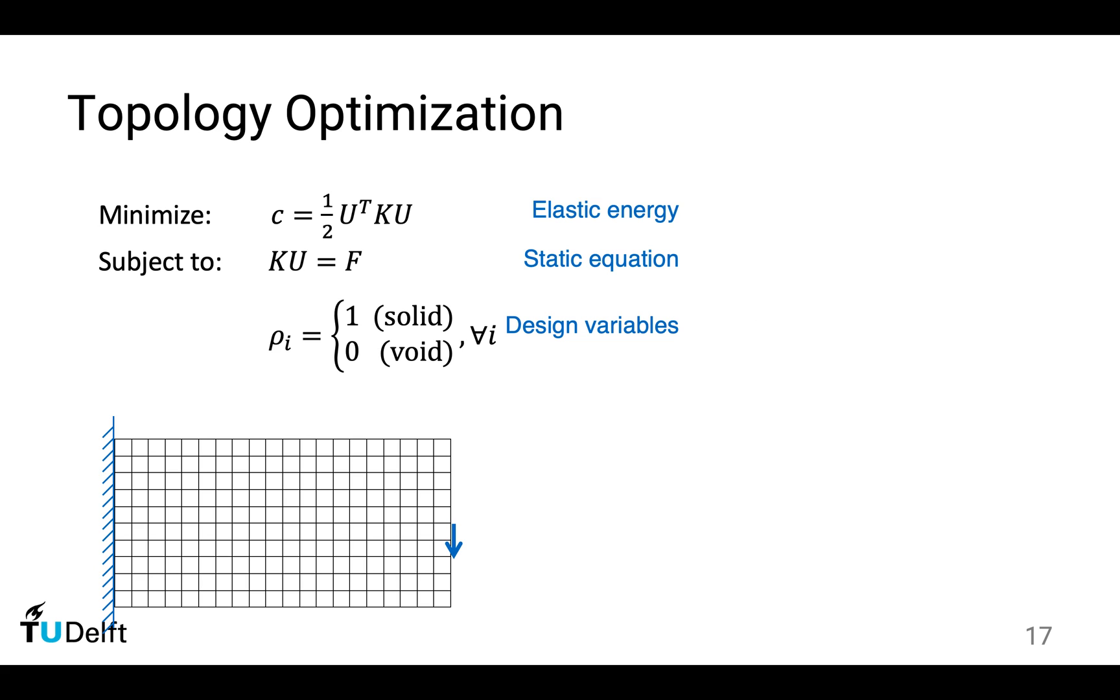The second constraint deals with the design variable. In this case, we have 10 by 20, we have 200 design variables, which indicates at each point in the domain should it take 0, which means empty, or should it take 1, which means solid. If it is 1, it will be displayed in black to indicate some material.